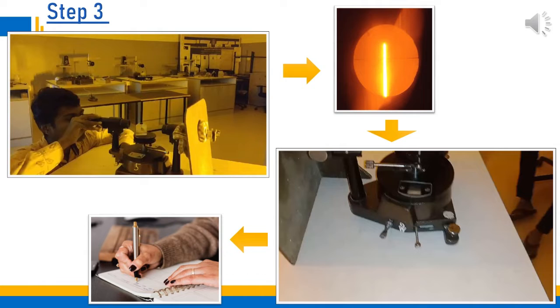Move the telescope on one side to observe the ray of light from the prism. Record the readings after naming the two vernier scales, then note it down.